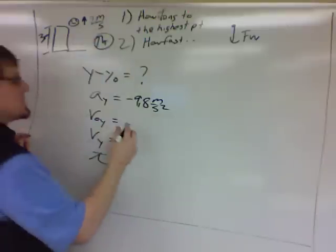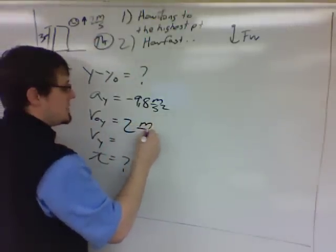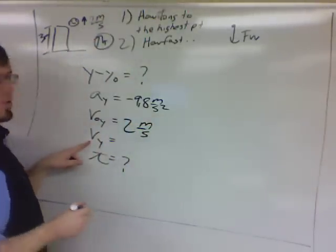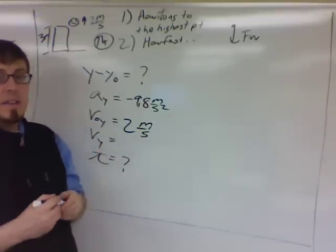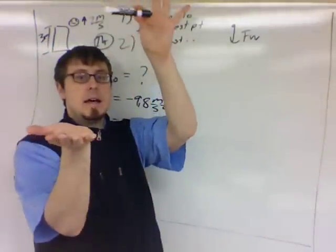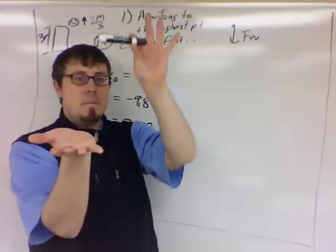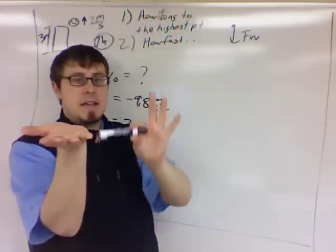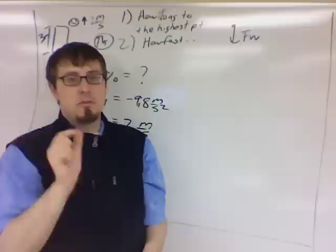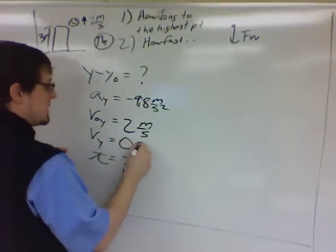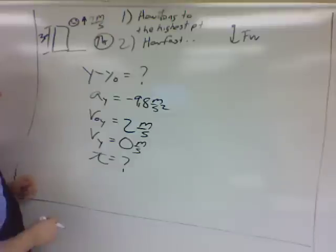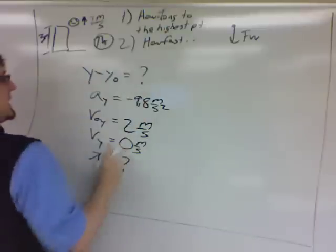Initial velocity in the y, that was given, is up at 2 meters per second. Final velocity in the y direction, we get to pick when the final part is. In this case, we're saying the final part of our trip is at the top. When something's going up, before it starts to come back down, it has to stop for a split second. So v final in the y will be 0 meters per second. At this point, we have enough to go ahead and solve for t.